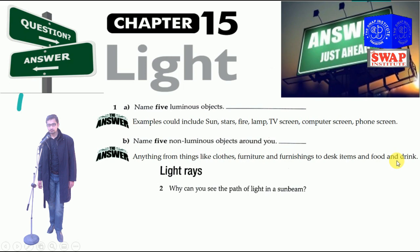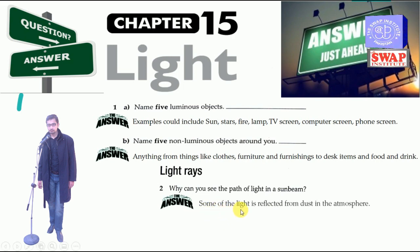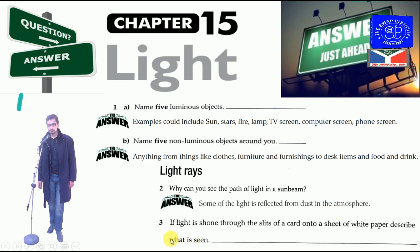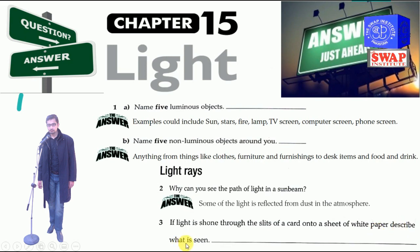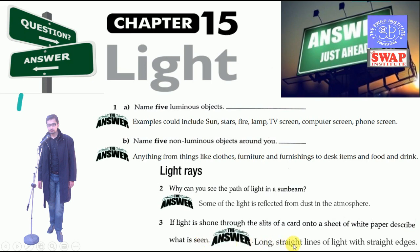The second question on light rays: why can you see the path of light in a sunbeam? The answer is that some of the light is reflected from dust in the atmosphere. If light is shown through a slit of a chart onto a sheet of white paper, what is seen? The answer is a long, straight line of light with straight edges.